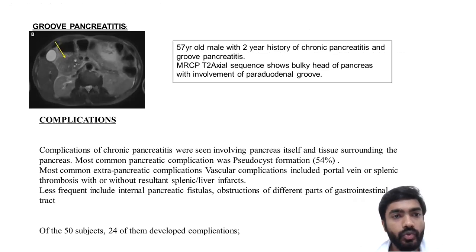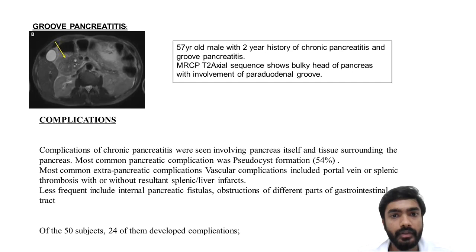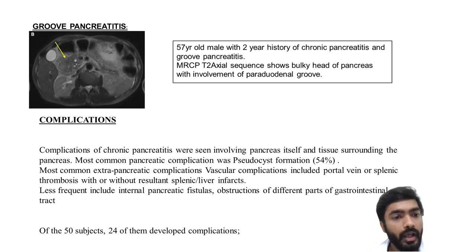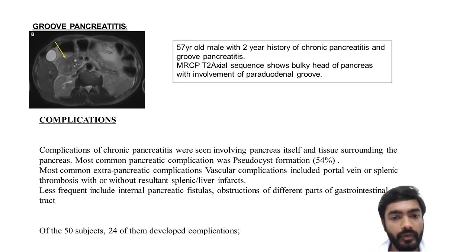Another form is groove pancreatitis: a 57-year-old male with a history of chronic pancreatitis and groove pancreatitis, in which para-duodenal groove involvement was present with a bulky head of the pancreas. Complications of chronic pancreatitis were seen involving the pancreas itself and surrounding tissue. The most common pancreatic complication was pseudocyst formation in 54% of patients. The most common extra-pancreatic complications were vascular complications including portal vein or splenic vein thrombosis with or without resultant splenic or liver infarcts, and less frequently internal pancreatic fistula and gastrointestinal tract obstructions. Of 50 subjects, 24 developed complications.